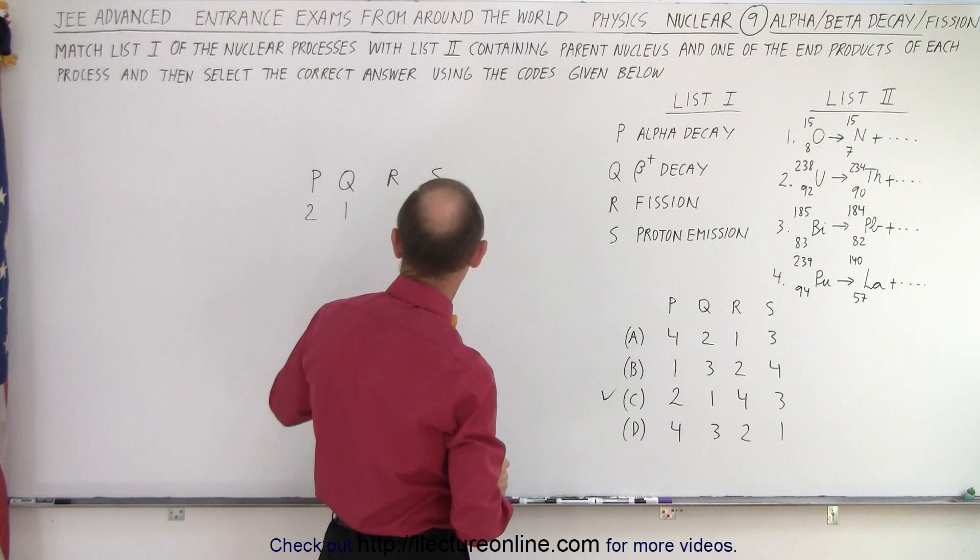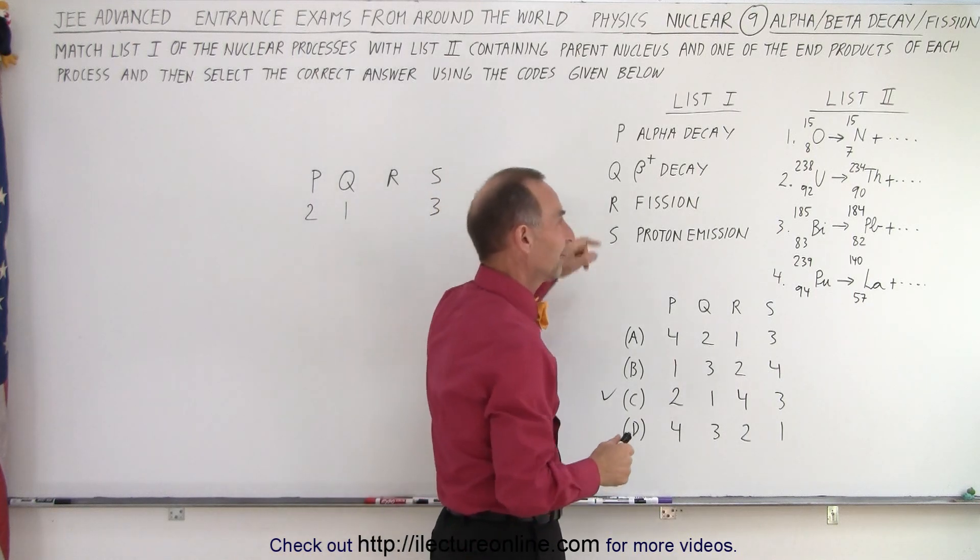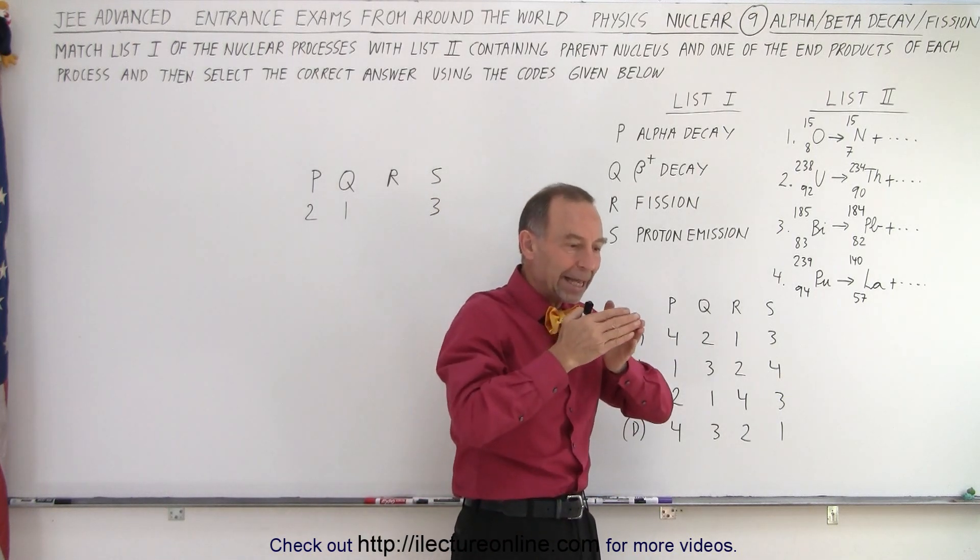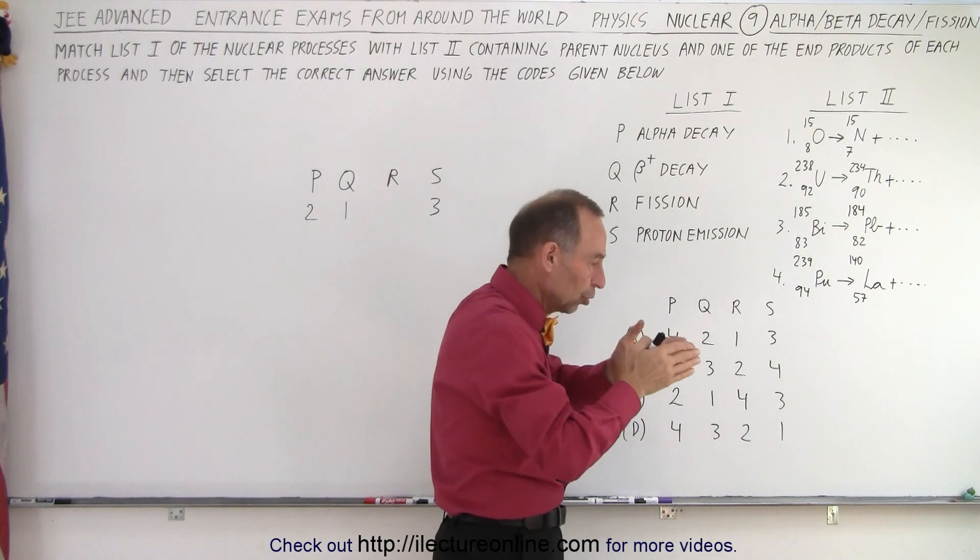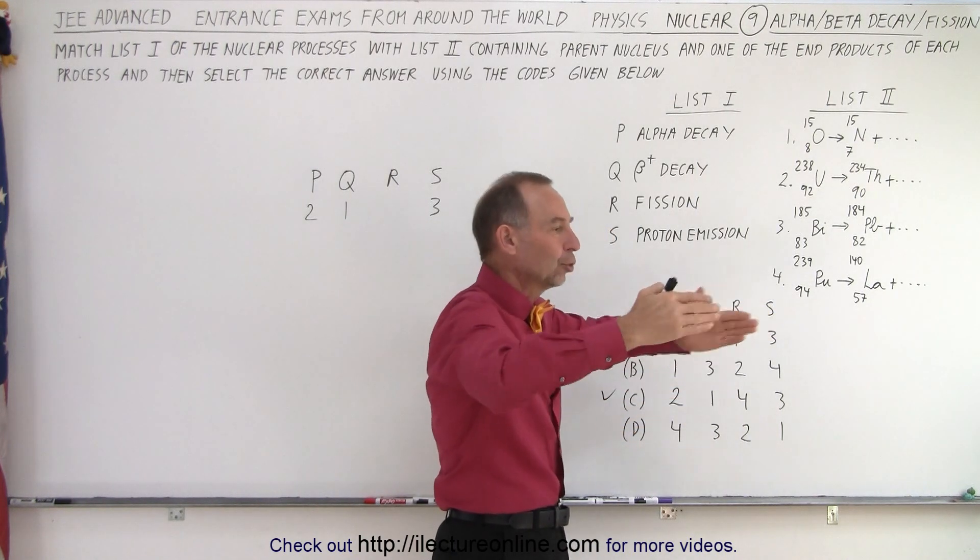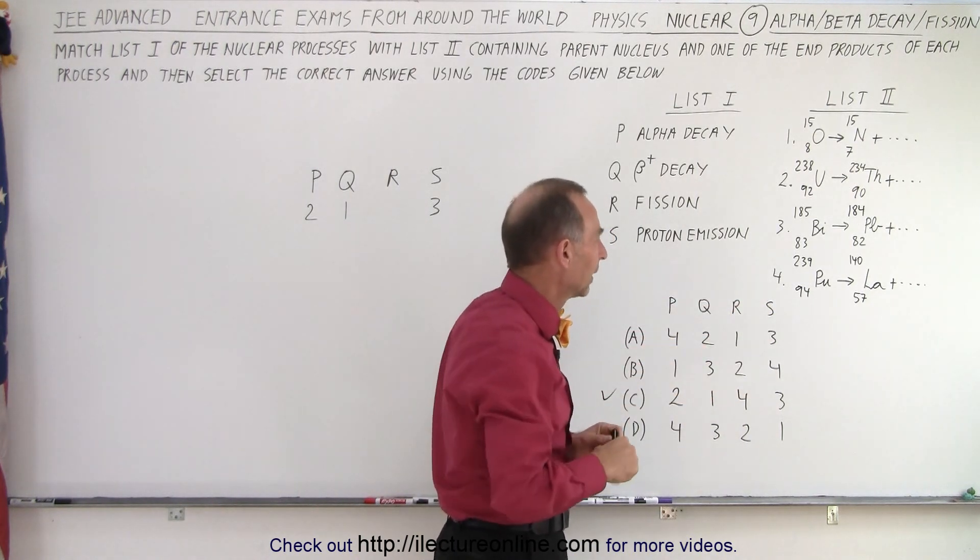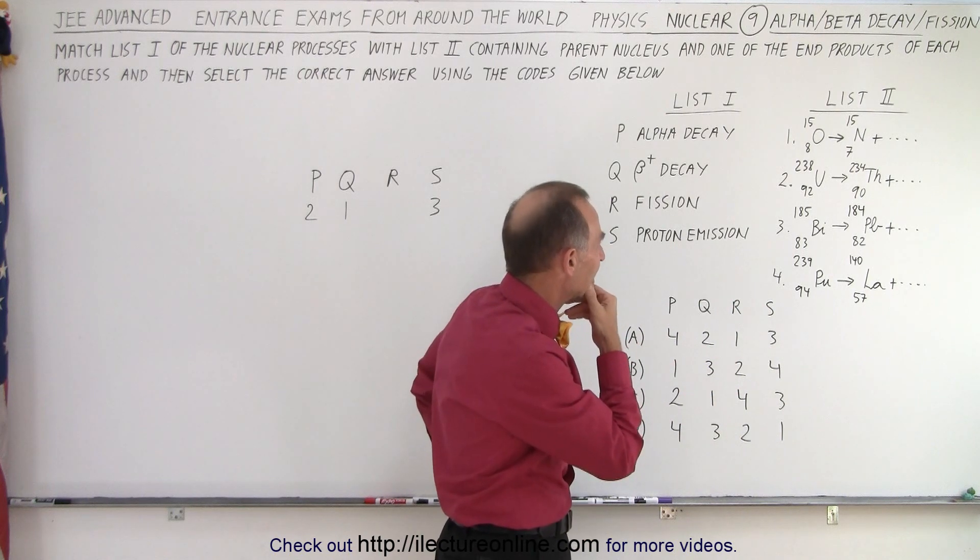And finally, we have one left to go, R. R is fission. Fission, of course, is where we take a large nucleus and we split it into two smaller nuclei. And let's see here.